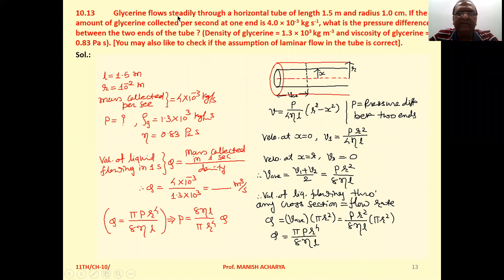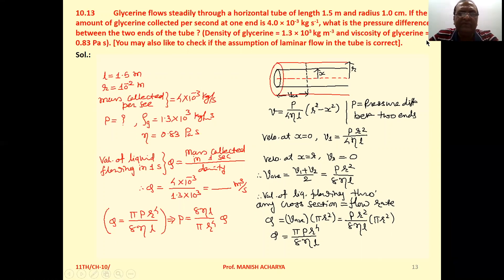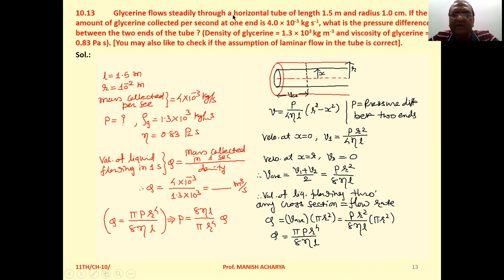Problem 10.13. Glycerin flows steadily through a horizontal tube of length 1.5 meter and radius 1 centimeter. If the amount of glycerin collected per second at one end is 4 × 10⁻³ kilogram per second, what is the pressure difference between the two ends of the tube? Density of glycerin is 1.3 × 10³ kg/m³ and viscosity of glycerin is 0.83 pascal second. Also check if the assumption of laminar flow in the tube is correct.